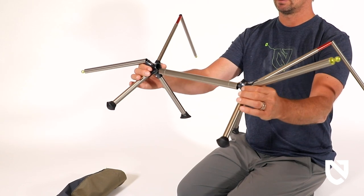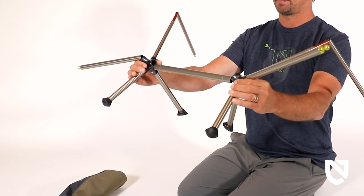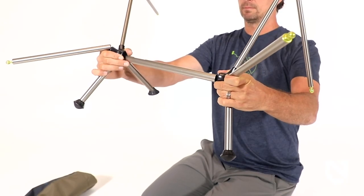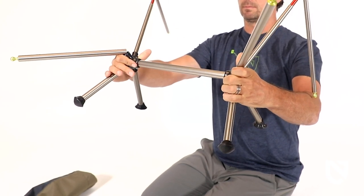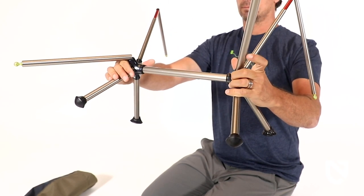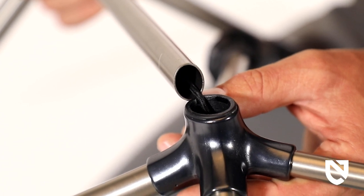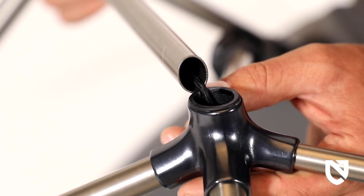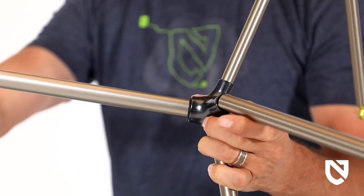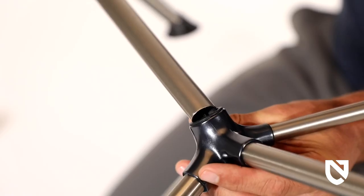Holding both hubs in front of you, make sure all legs point downward. Next, connect the hubs to either side of the oval shaped crossbar. There are black plastic inserts in the hubs that ensure the best fit possible at this connection point, but it is important to ensure the oval crossbar is completely inserted into both hubs.